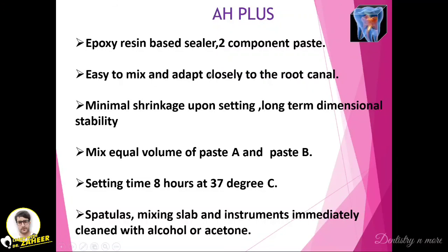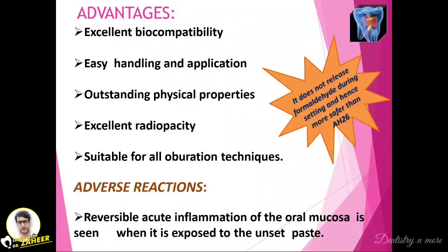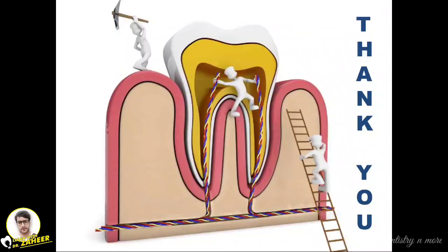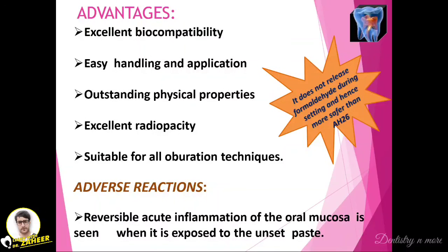AH Plus is also an epoxy resin-based sealer with two paste components — paste A and paste B — mixed in equal volumes, making it easy to mix without powder and liquid. It can be closely adapted to the root canal with minimal shrinkage upon setting and long-term dimensional stability. Setting time is 8 hours at 37 degrees. Instruments should be immediately cleaned with alcohol or acetone. Advantages include excellent biocompatibility, easy handling, outstanding physical properties, excellent radiopacity, and suitability for all obturation techniques. It does not release formaldehyde during setting, making it safer than AH26. The adverse reaction is acute inflammation of the oral mucosa when exposed to the unset paste.